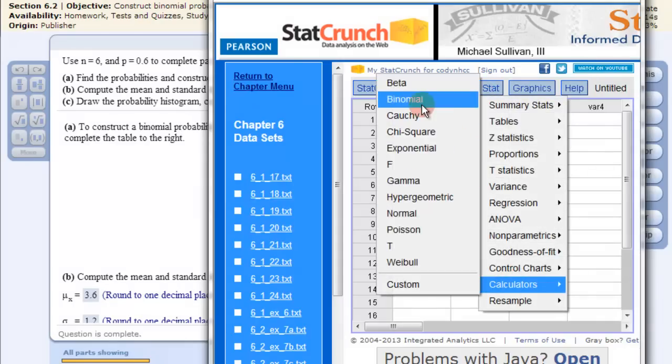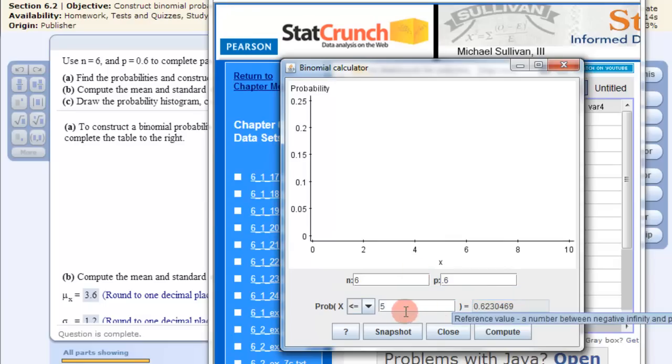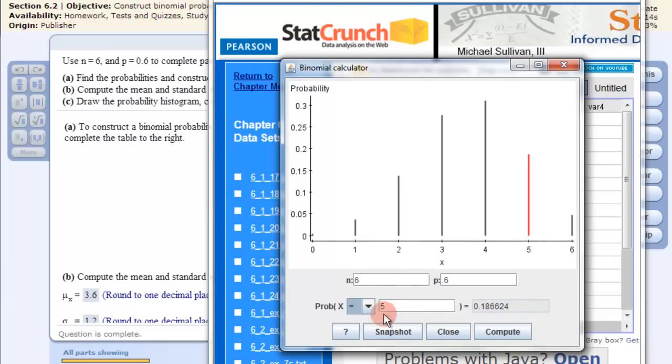So I just go into Stat, calculator, binomial and then I do each of them. So 6 and then 0.6 and now I set this to equal. Make sure you got that right.